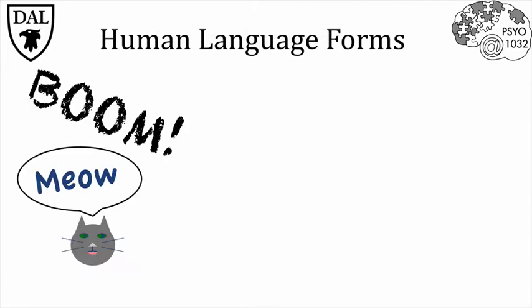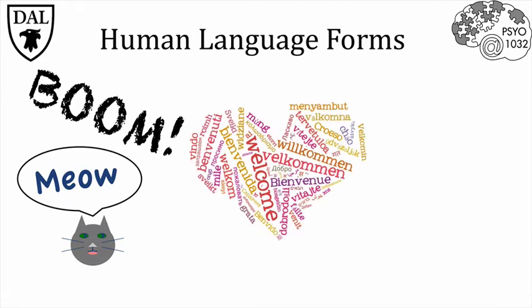Unlike boom or meow, most word sounds don't bear any relationship whatsoever to the things they are describing. So the words in human language are symbolic. These symbols differ between languages, so there is a lot of variation in the sounds different groups of humans use to communicate.